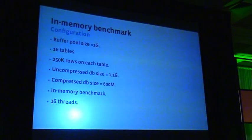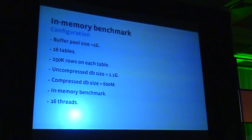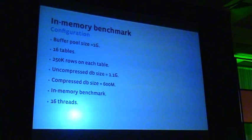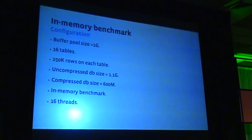The benchmark configuration: the benchmark is in-memory, just to make it fast, though the point I'm illustrating holds for IO-bound benchmarks as well. The buffer pool size was 1 gigabyte. There were 16 tables, each with the schema shown, and 250,000 rows per table. The uncompressed database size was 1.1 gigabytes, so it almost fits in memory — this was essentially an in-memory benchmark. The compressed database size was 600 megabytes, and there were 16 threads accessing the tables in parallel.